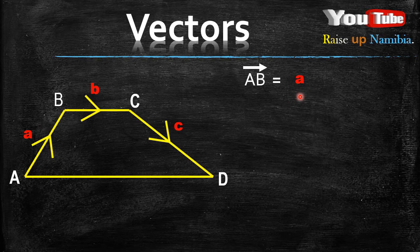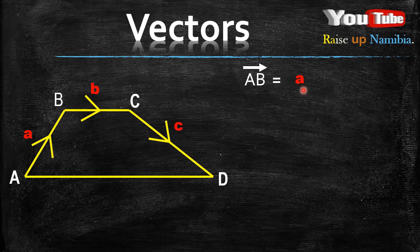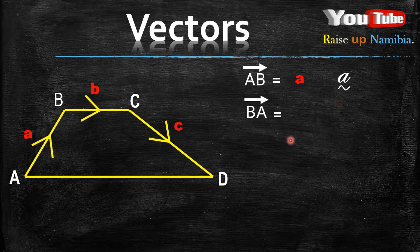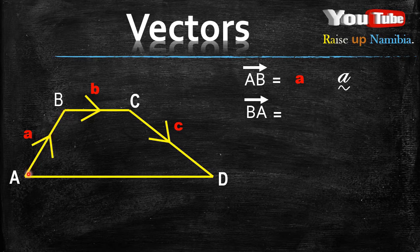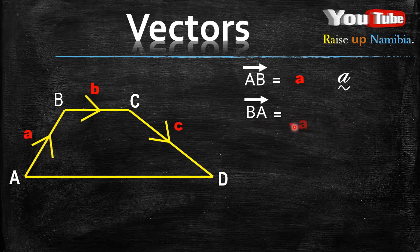One thing I forgot to mention in the previous vectors videos is that when I'm writing these vectors, I'm typing them as a bold letter. While if you are writing them in your book or test, you just give it a little swerve underneath or you can underline it. Now, what if I asked you to find the vector BA? The vector AB is a. If you are looking for BA, notice that we are going the opposite direction — it becomes negative a. So AB is positive a, but BA is negative a.